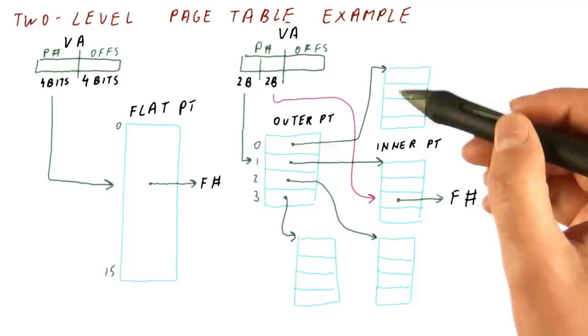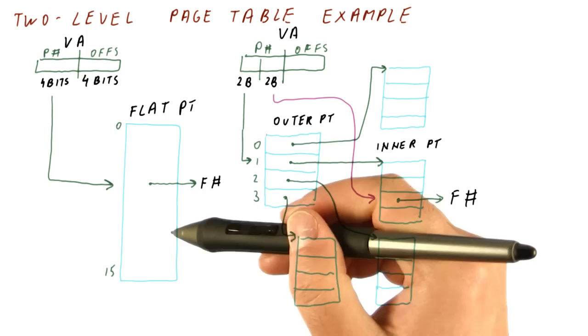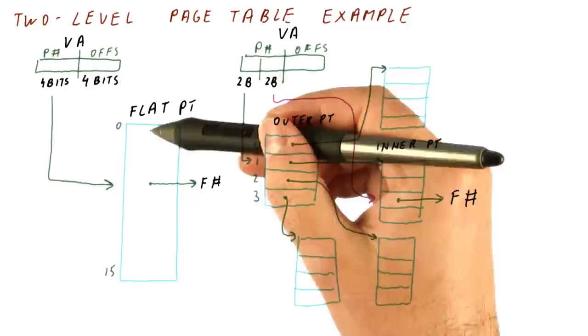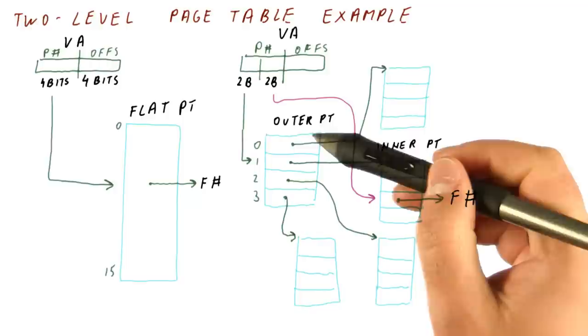So as indicated previously, the total size of all the inner page tables here is the same as the original size of the flat page table here. We had 16 entries here. We have four times four entries here. Plus, we added the space for the outer page table. So where are the savings?